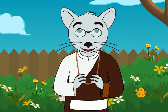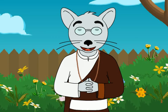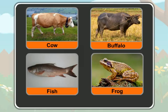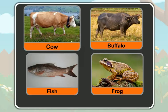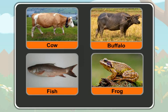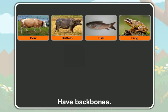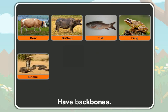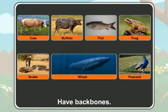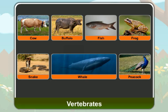Now, let us talk about the animals that have backbones, or the vertebrates. Animals like a cow, a buffalo, a fish and a frog have backbones. Animals like a snake, a peacock and a whale also have backbones. So, all these animals are vertebrates.